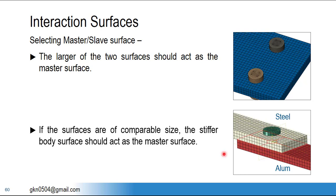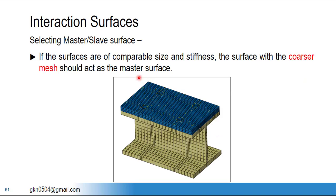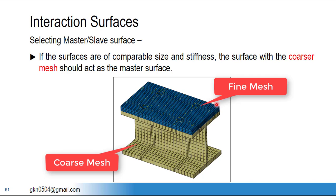The third rule: if two surfaces are comparable in both size and stiffness, the coarser mesh component should act as master, or equivalently the finer mesh component surface should be chosen as slave. For example, a plate with finer mesh and a beam with coarser mesh — the beam's contact surface should be the master and the plate's contact surface the slave.